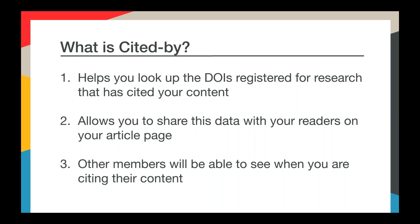The Cited by service helps you look up the DOIs registered for research that has cited your content. It allows you to share this data with your readers on your article page. It helps publishers, editors, and authors discern who is citing their content, and readers are able to see what articles have cited the article that they are currently reading.